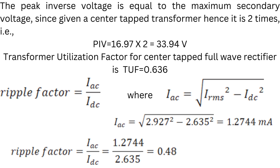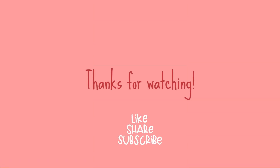The peak reverse voltage: since Vm = 120 × √2, and it is a center-tapped transformer, the maximum voltage appearing across the diode during reverse bias is 2 × Vm = 2 × 169.7 = 33.94 volts. The transformer utilization factor for a full-wave rectifier is 0.636. The ripple factor = Iac / Idc, where Iac = √(Irms² − Idc²), giving a ripple factor of 0.48.